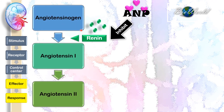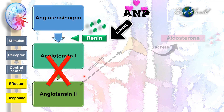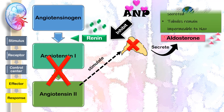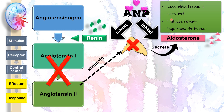ANP will inhibit renin as well as aldosterone. When ANP inhibits renin, the whole angiotensinogen pathway in the liver is inhibited too. Without renin, angiotensinogen cannot be converted into angiotensin 1, and without angiotensin 1, angiotensin 2 cannot be produced. Since angiotensin 2 is necessary to stimulate the adrenal gland to secrete more aldosterone, without angiotensin 2, the adrenal gland cannot be stimulated, so less aldosterone will be secreted. Furthermore, ANP also directly inhibits aldosterone, so the little aldosterone being secreted will become inactive.